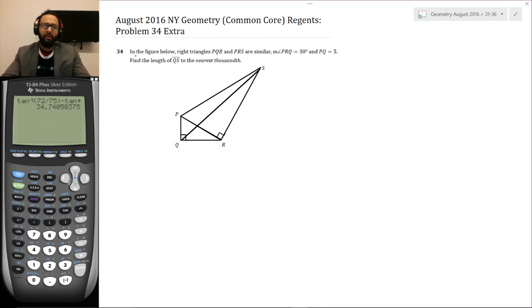In the figure below, red triangles PQR and PRS are similar. And the measure of angle PRQ equals 30 degrees, and PQ equals 5. Find the length of QS to the nearest thousandth. Pause the video. Try it.